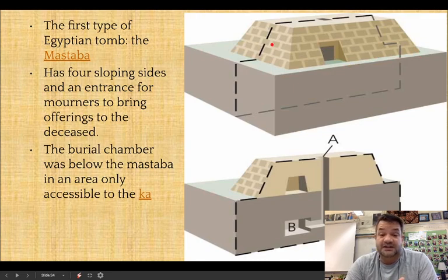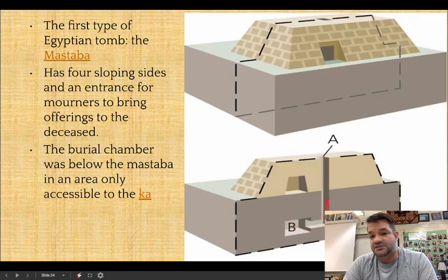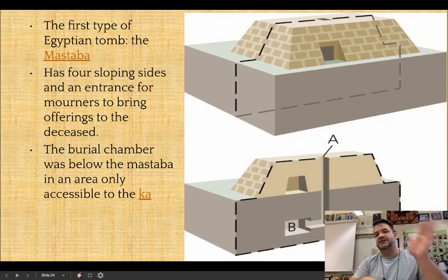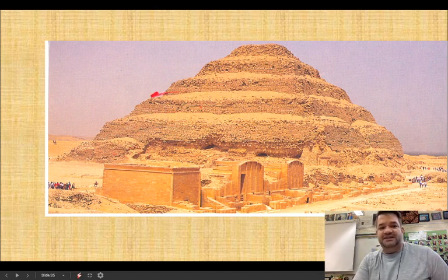The mastaba replicates the Ben Ben and serves as the burial place and house for the body. You could walk in and place offerings in a temple chamber, but the person would be buried below in a chamber with a channel allowing the ka spirit to enter and reanimate the body. When you stack a mastaba on top of a mastaba on top of a mastaba, you get a pyramid - they're just stacked mastabas that have then been streamlined.